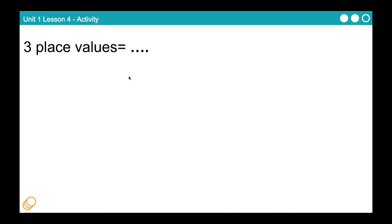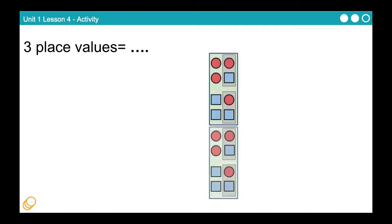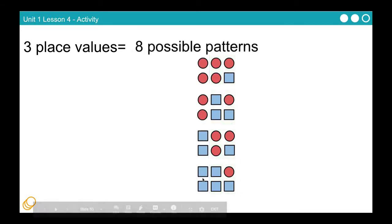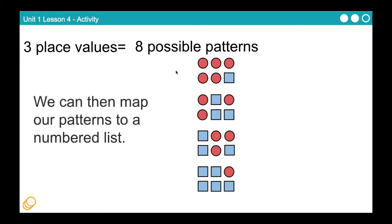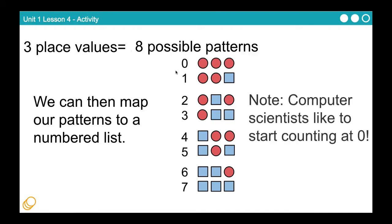If you add a third place value, how many do you have? We now have one, two, three, four, five, six, seven, eight. Eight possible patterns. So you may notice that every time we add a value here, the number of possible patterns jumps up, is doubled, essentially. So we had two patterns, and then four, and now we have eight.